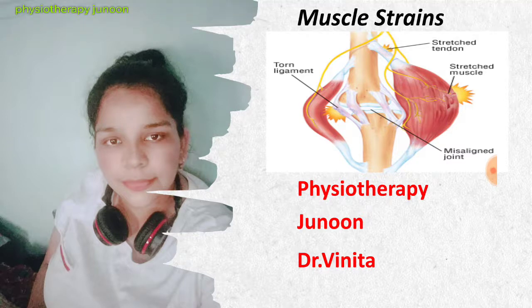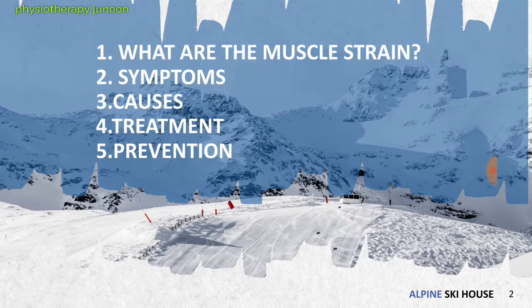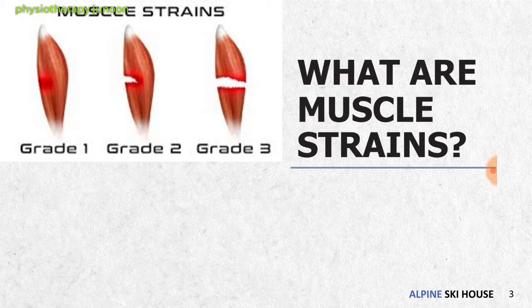In this video we will discuss the different muscle injury classifications: what muscle strains are, their symptoms, causes, treatment, and prevention. Muscle strain is divided into three grades — Grade 1, Grade 2, and Grade 3. This classification is based on the number of fibers disrupted according to clinical and imaging investigations.